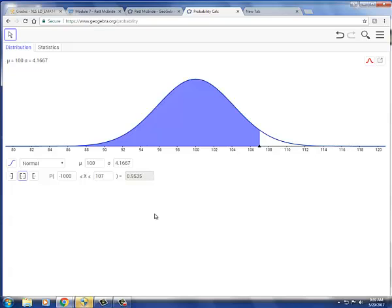So we have two options. We can either subtract 0.9535 from 1 and that will give us the p-value. But let me show you another option. We can instead change the lower limit to 107 and then adjust the upper limit to an arbitrary large number. In this case, let's just use positive 1,000. Notice now that the shaded region is now to the right of 107 and our probability is 0.0465.